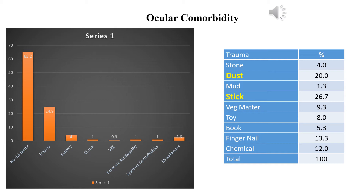Following trauma, risk factors included previous history of surgery, systemic comorbidities like vitamin A deficiency, history of chickenpox, and in some older children, contact lens-induced keratitis. Few had associated vernal keratoconjunctivitis, exposure keratopathy due to Bell's palsy, and other causes. Among trauma types, stick and dust trauma were most common, followed by fingernail injury and trauma by toy. Among chemical trauma, fevicol was most common, followed by Madras eye drops trauma.